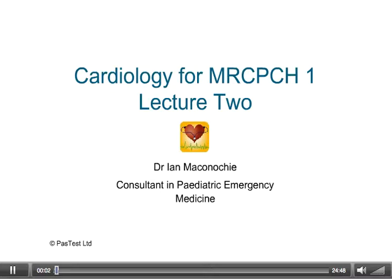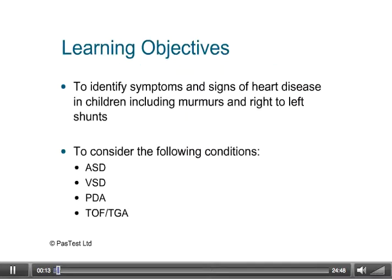Hello, this is Lecture 2 in the series of 3 on cardiology for MRC-PCH Part 1, delivered by Ian McConaughey. The learning objectives for this lecture are to identify signs and symptoms of heart disease in children, including murmurs and right-to-left shunts, and to consider the following conditions as listed.